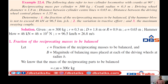We need to find: first, the fraction of the reciprocating masses to be balanced if the hammer blow is not to exceed 46 kilo-newtons at 96.5 km/h; second, the variation in tractive effort; and third, the maximum swaying couple.